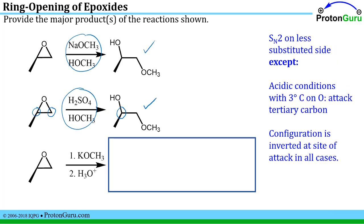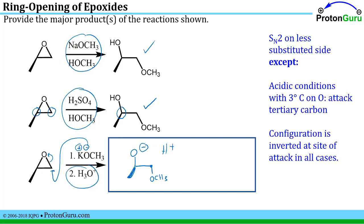In this next case we again have a strong base. Sometimes you'll see these written out as two steps: step one is the nucleophile attacks the less substituted carbon of the epoxide, placing the nucleophile on that carbon while maintaining the configuration at the other center. In step two, you simply add a source of protons — sometimes written as water, H3O+, or H+ — and that leads to the final product.